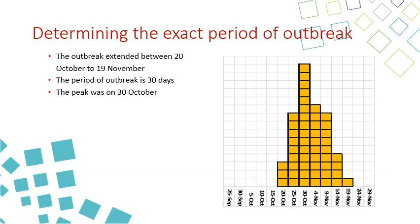For example, the outbreak may extend between October 20 and November 19 — a period of 30 days — with the peak on October 30. This is what determining the exact period of outbreak means: very easy and very descriptive in terms of how many cases and when. In epidemiology, we describe place, time, and person — the epidemic curve describes the time and person.